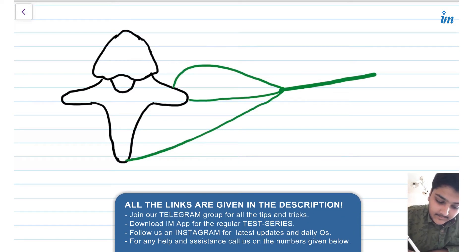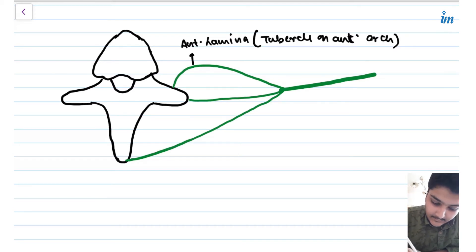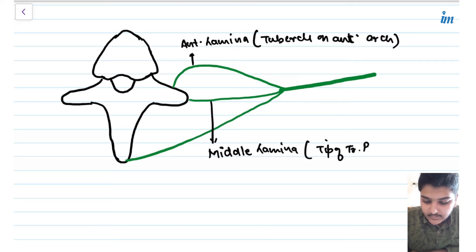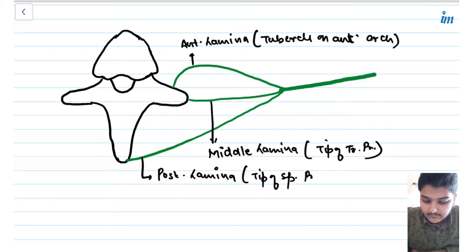Let's label everything. Here we have the anterior lamina that arises from the tubercle on the anterior arch. Then here we have the middle lamina that arises from the tip of the transverse process. And here we have the posterior lamina that takes its origin from the tip of the spinous process of the vertebra. The important point is to know what muscles are present in between these laminae.